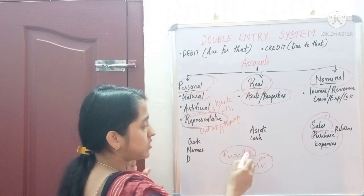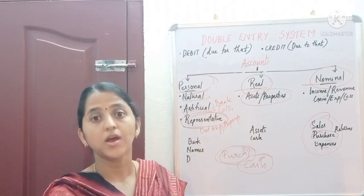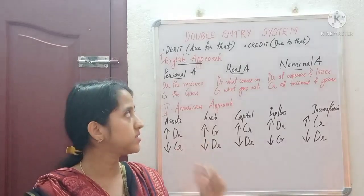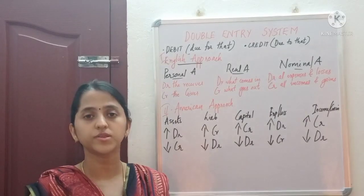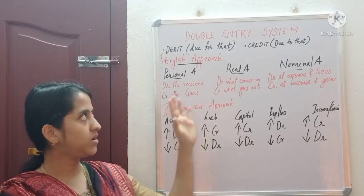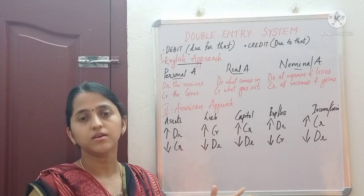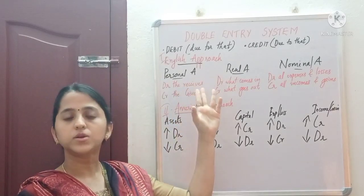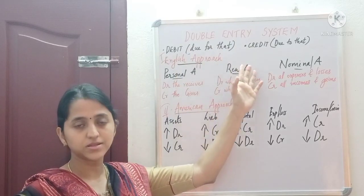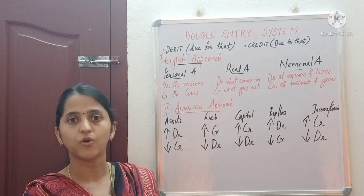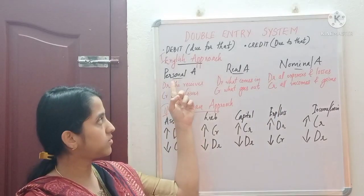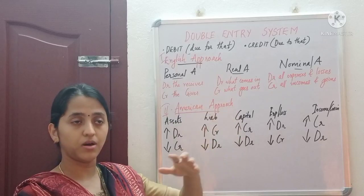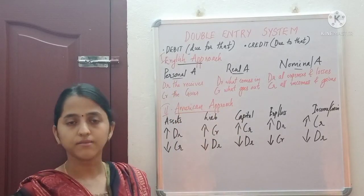We have to categorize which item falls under which account, then apply the rule of debit and credit. There are mainly two approaches in determining debit and credit: the first is the English approach and the second is the American approach. According to the English approach, classification of debit and credit is based on the type of accounts — personal, real, and nominal — and from that we determine which to debit and which to credit.